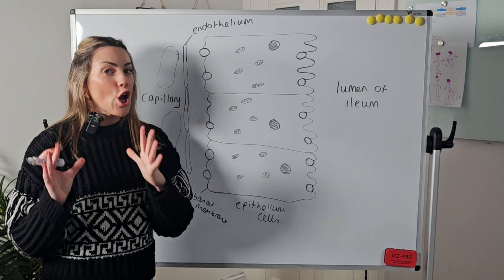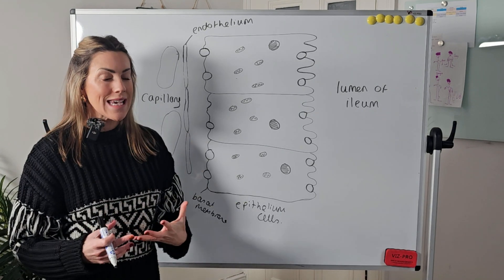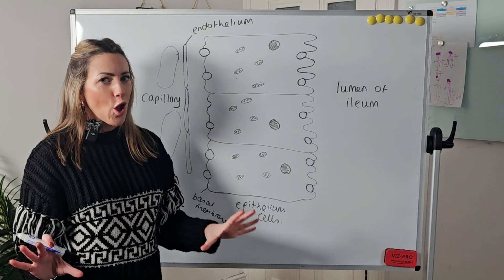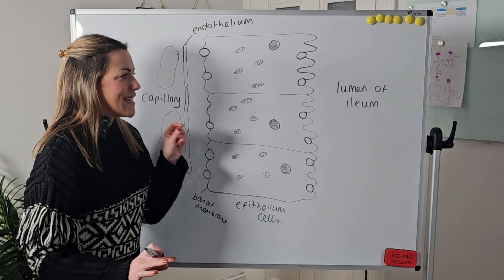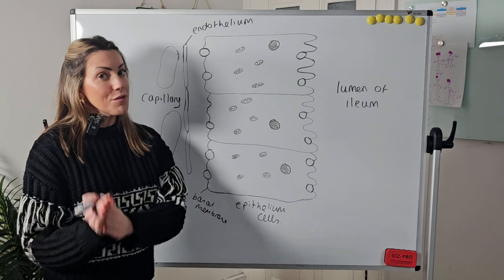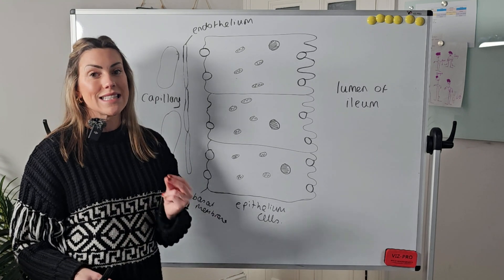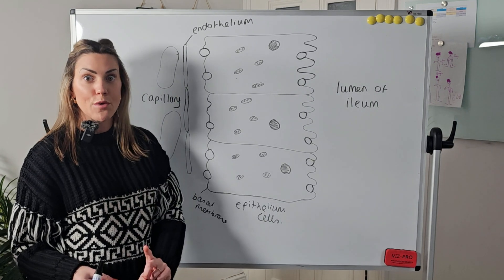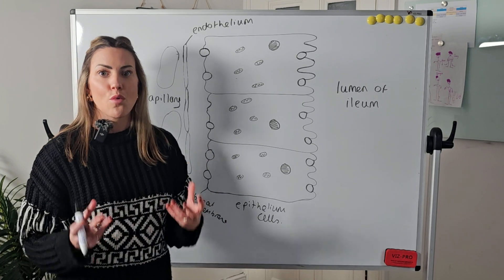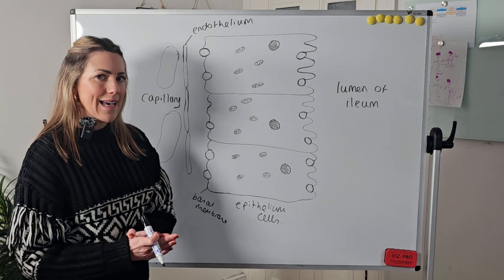In this video we're going to explain co-transport. We're going to go through this a little more slowly so you fully understand it. For this example of co-transport we're going to be looking at the small intestine. There is another example you'll look at in A-level biology: the kidney nephron and selective reabsorption in the proximal convoluted tubule. You can use this video to help you revise both examples because they're both co-transport working in the same way.